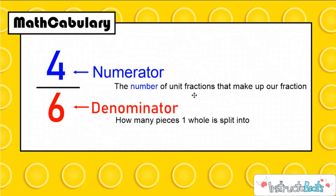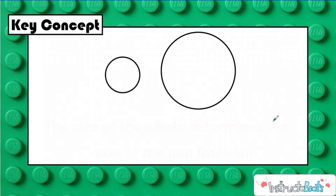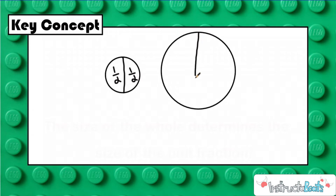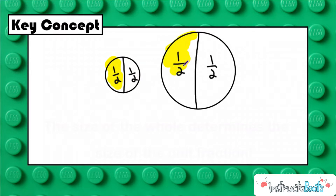Here I have two circles — I like to think about food, so I'm going to call them pizzas. Here we have a very small pizza and here we have a very big pizza. So if I said I ate one half of a pizza last night, your first question should be: well, how big was the pizza? Because if I split this pizza into half, that makes my unit fraction one half, so I'll label each piece one half. I split this whole pizza into two equal parts, making my unit fraction one out of two, or one half.